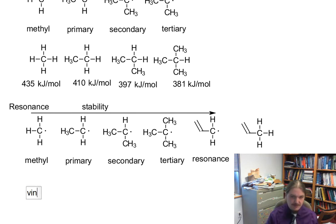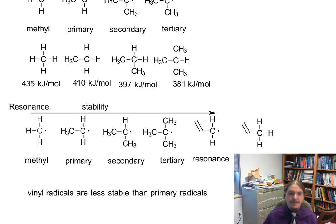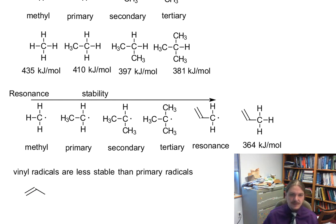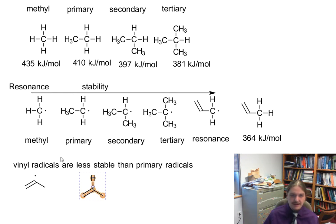It's worth noting that vinyl radicals are less stable than primary radicals. A vinyl radical is an unpaired electron on an sp2 hybridized carbon. That carbon hydrogen bond is significantly harder to break than the carbon hydrogen bond even in methane. The bond dissociation energy for this vinyl radical is 464 kilojoules per mole. So we're not ever going to be talking about this kind of radical, at least in the current context.